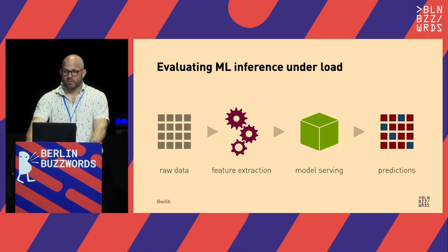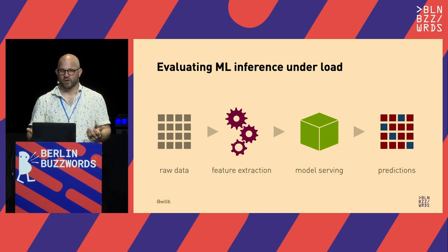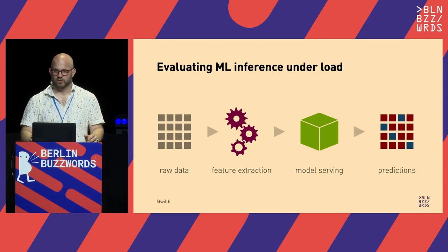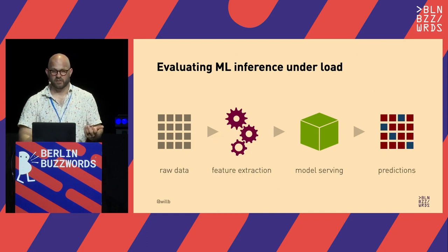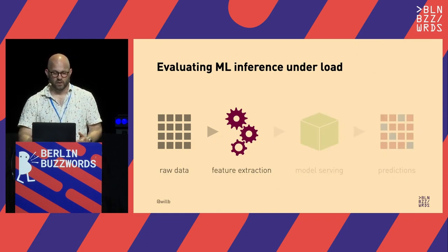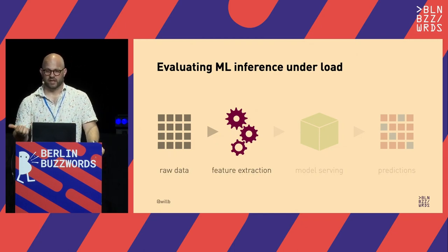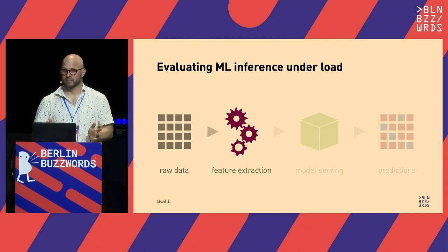In a lot of cases we care about the throughput and latency of this model serving, and it may or may not be sensitive to the actual data we're predicting on. We can generate sensible data as quickly as possible to get an upper bound on the performance of our system. The nice thing about doing this with synthetic data is that we can evaluate multiple parts of the system separately — we can generate synthetic raw data to ask whether the feature extraction pipeline will be the bottleneck.